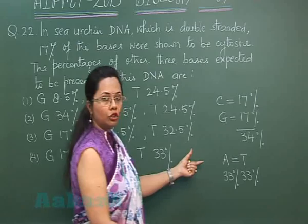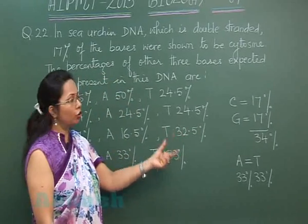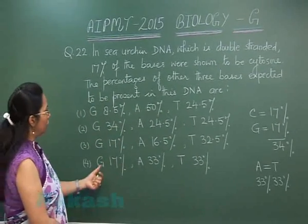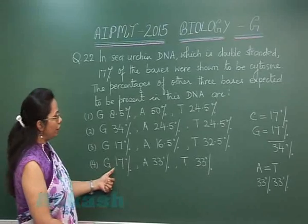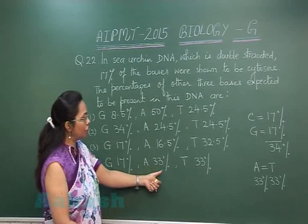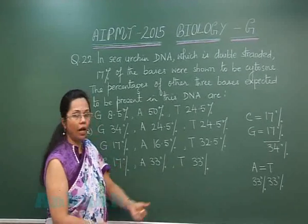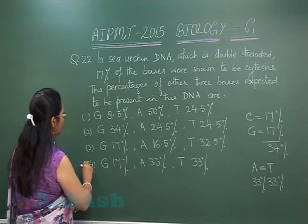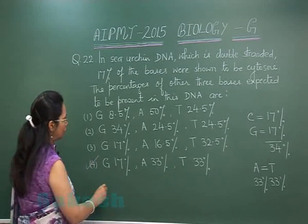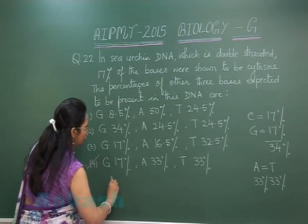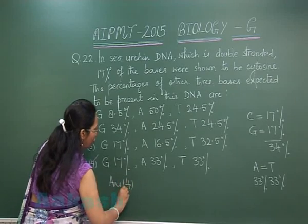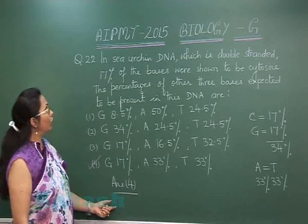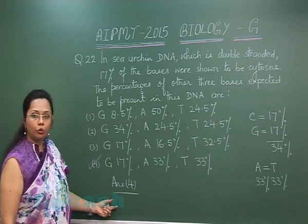In this question we had to give the percentages of other bases. Guanine is 17%, adenine is 33%, and thymine is 33%. So this is our correct answer — the answer is 4. Now let's move on to question number 23.